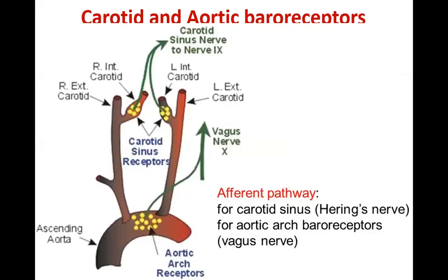Baroreceptors — baro means pressure, receptors means sensory organs which sense change in pressure — are nothing but stretch receptors present in the walls of the heart and large vessel walls. They are spray nerve endings. Whenever blood pressure increases, there is a stretch on the arterial wall; since these are stretch receptors, the baroreceptors are also stretched and hence stimulated. They are present in the walls of the arch of the aorta and in the carotid sinus just after the bifurcation of the common carotid artery into internal and external carotid artery, as well as in the walls of the ventricles and atria.